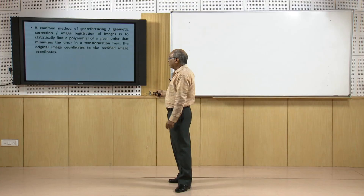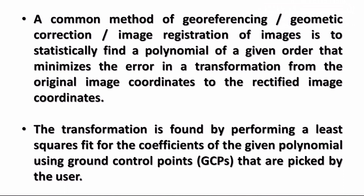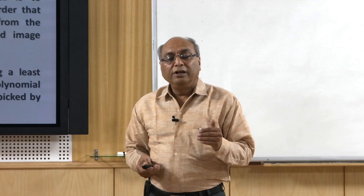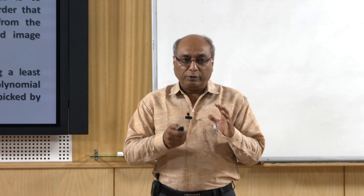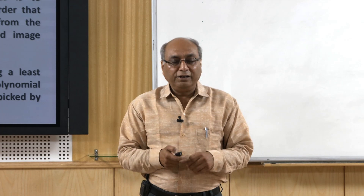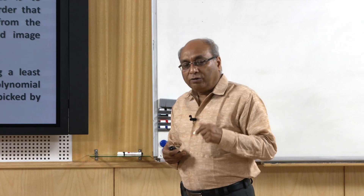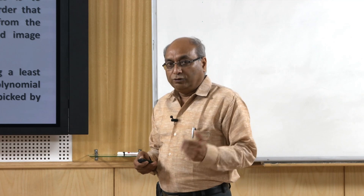Once the transformation is found by performing a least-squares fit for the coefficients of a given polynomial, the polynomial order you choose depends on your input data and the distortions present. If there are many distortions and you are aware of them, you go for higher-order polynomial equations. The number of GCPs required also changes depending on the polynomial order.